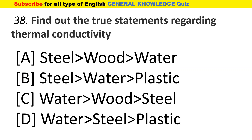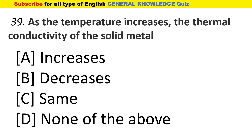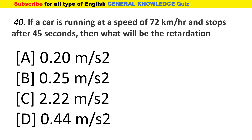Find out the true statement regarding thermal conductivity. As temperature increases, the thermal conductivity of a solid metal decreases. If a car is running at a speed of 72 km per hour and stops after 45 seconds, what will be the retardation? The answer is D.